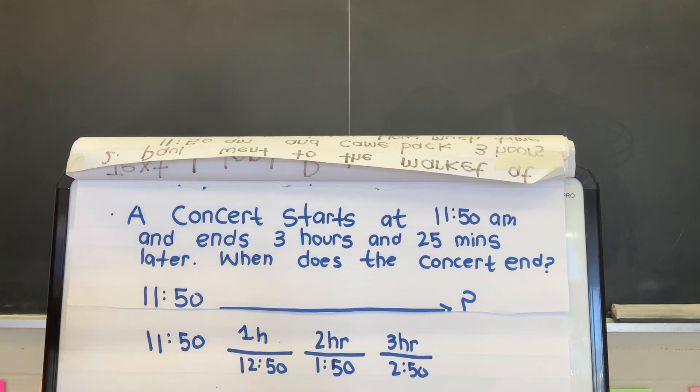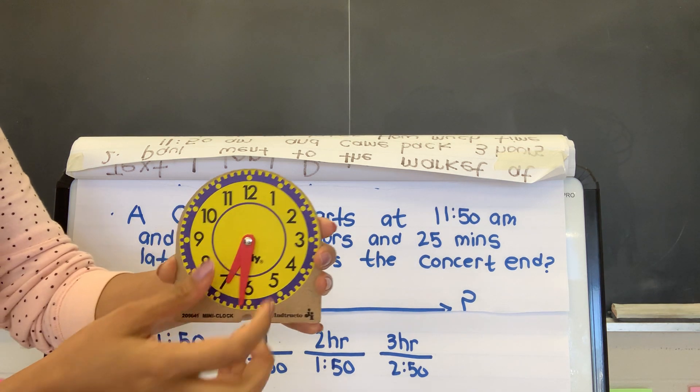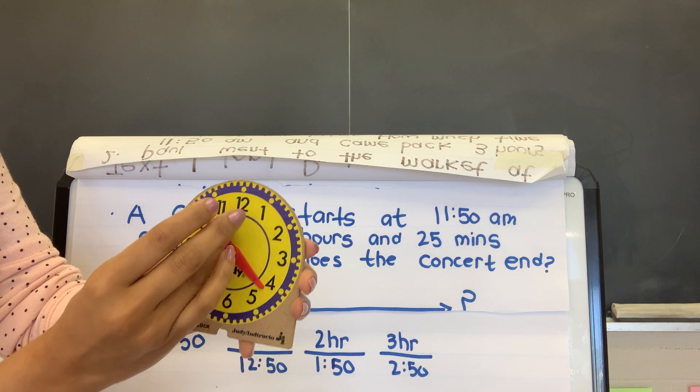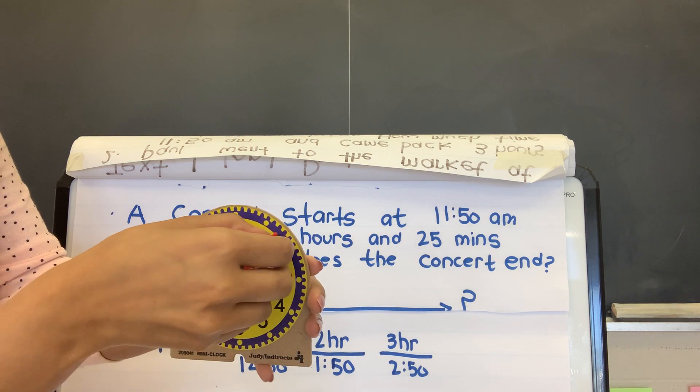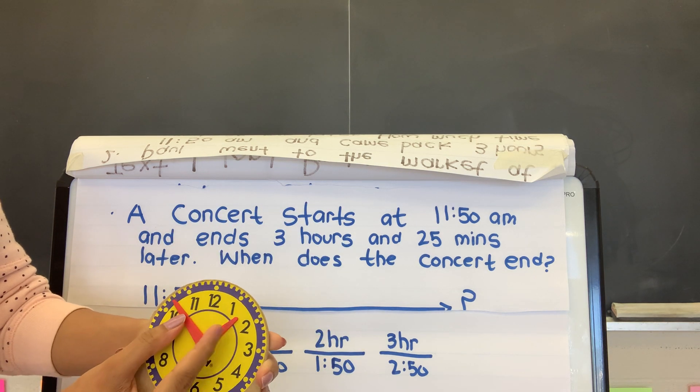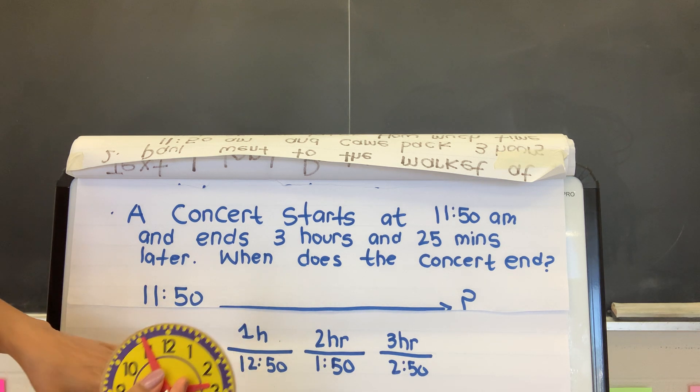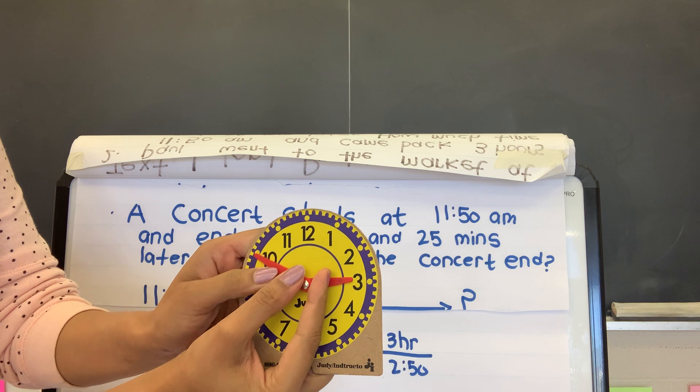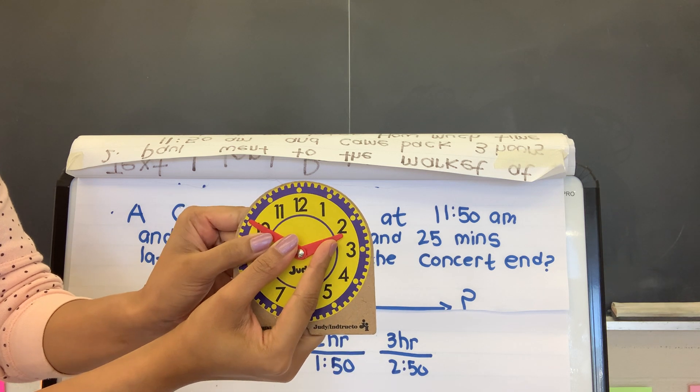So we know exactly at 2:50, now hold up our clock so you can see, I have a small one this time. So here's my small hand is going to be at 2, and my long hand is going to be at 50, because right now we found out that all the way from 11:50 to 2:50, it's 3 hours. So 11:50 to 2:50.